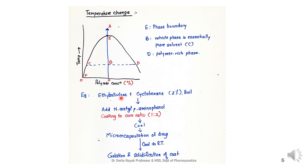Thus, the temperature change technique is generally applied to polymers which are insoluble at room temperature in the solvent but are soluble at higher temperatures. The polymer is added to the solvent, the temperature is increased to get a homogeneous solution, the drug is added under stirring, and simultaneous cooling causes precipitation of the polymer and subsequent microencapsulation of the drug particles, which are further rigidized and hardened by cooling to room temperature.